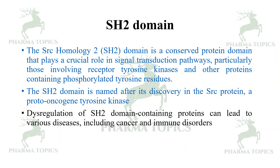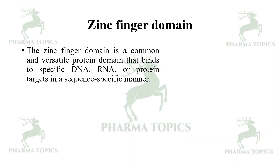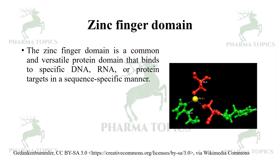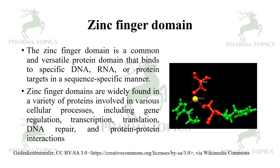Dysregulation of SH2 domain-containing proteins can lead to a variety of diseases including cancer and immune disorders. The zinc finger domain is a common and versatile protein domain that binds to DNA, RNA, or protein targets in a sequence-specific manner, utilizing two cysteine and two histidine residues. Zinc finger domains are widely found in proteins involved in gene regulation, transcription, translation, DNA repair, and protein-protein interactions. A separate video is available for zinc finger proteins — kindly go through it.